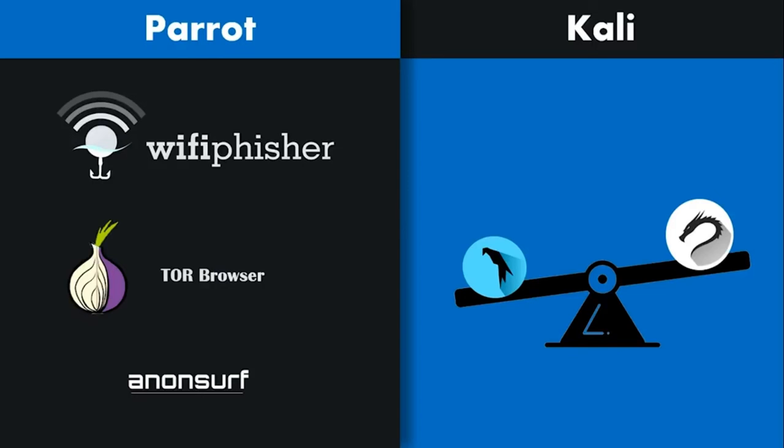Since Parrot OS is also designed with development in mind, it comes pre-installed with a bunch of useful compilers for various languages and IDEs for their respective development, which is completely absent on the Kali Linux side. So for hacking tools, Parrot OS definitely takes the prize.